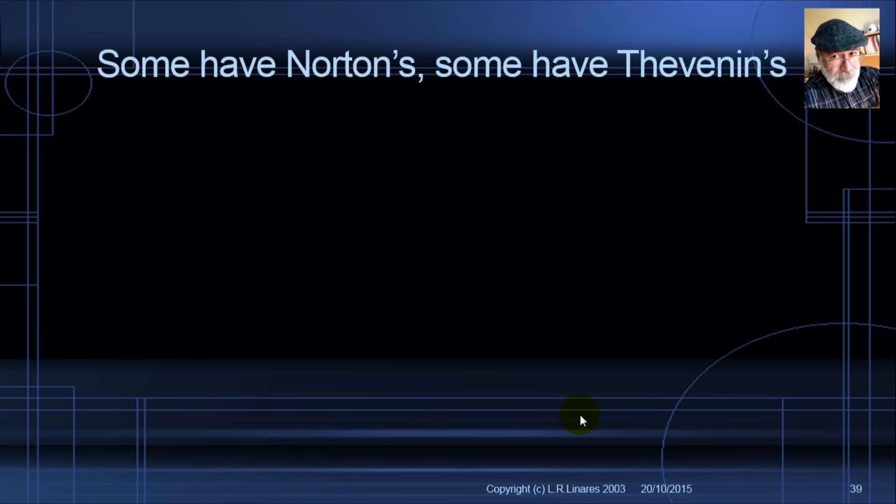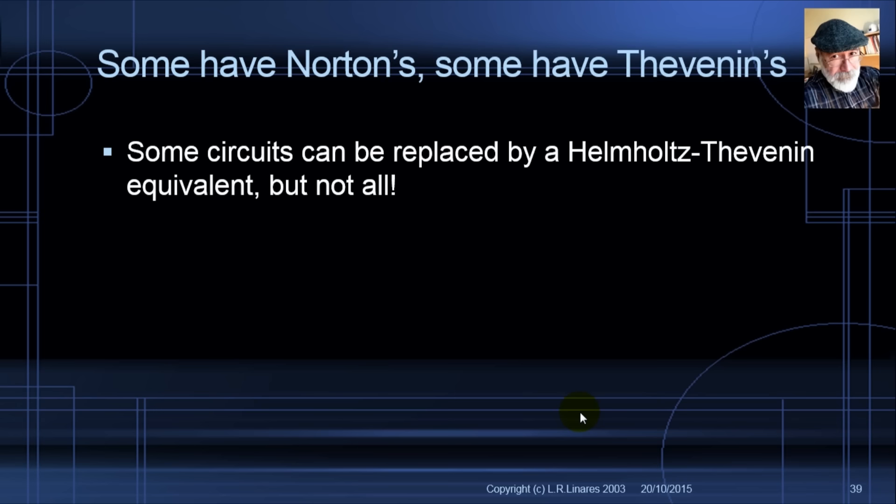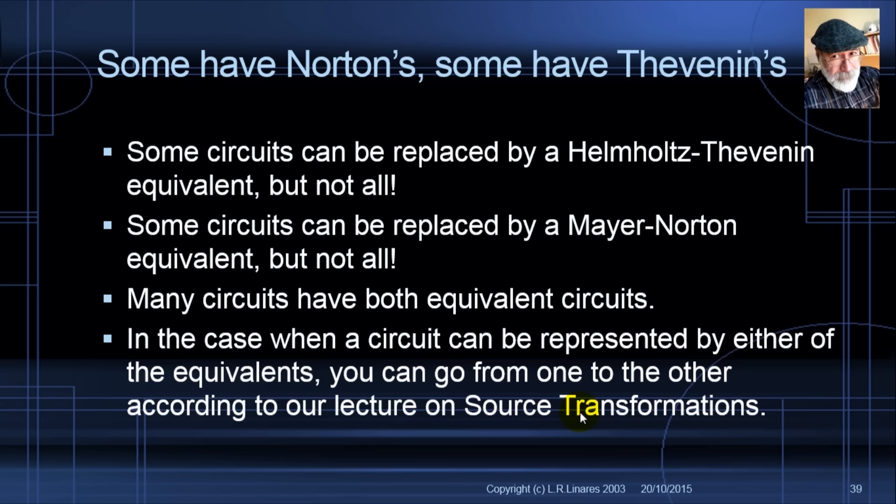Just a note: some circuits have a Norton equivalent, some have a Thevenin equivalent, and many have both — but sometimes a circuit has only one of the two. When a circuit can be represented by either equivalent, you can convert from one to the other according to our lecture on source transformations.